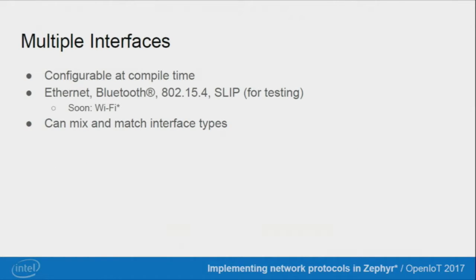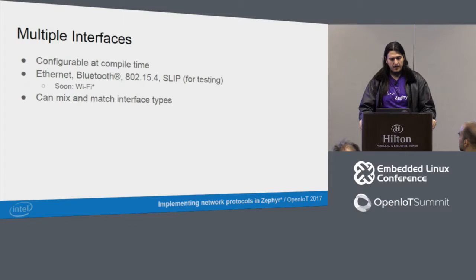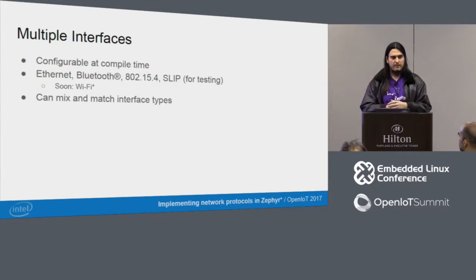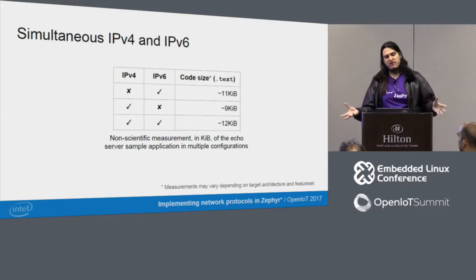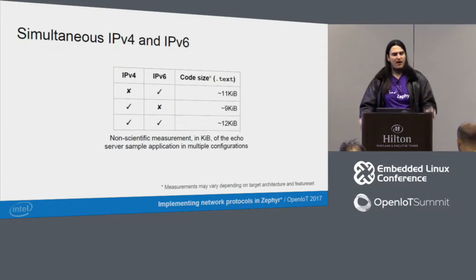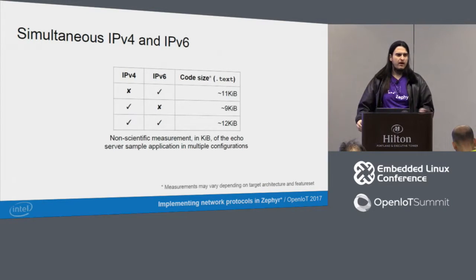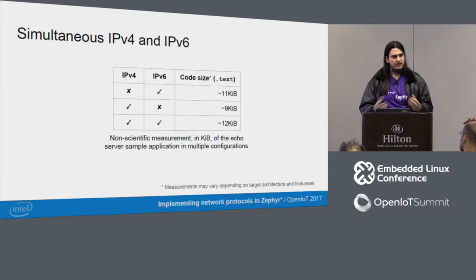Regarding multiple interfaces: as with many things in Zephyr, you configure that at compile time using kconfig. You can use Ethernet, Bluetooth, ZigBee, loopback for testing, and soon Wi-Fi. You can mix and match all interface types. You can also have simultaneous IPv6 and IPv4. Enabling IPv6 means there's little reason not to enable IPv4 as well — it's just about one kilobyte of additional code in the text section. We're now talking about newer microcontrollers with a megabyte of flash, so it's not much overhead to enable both.